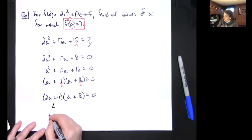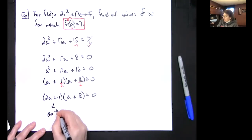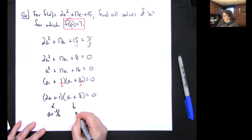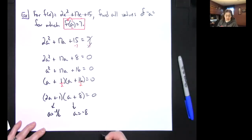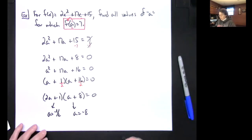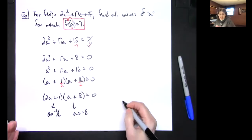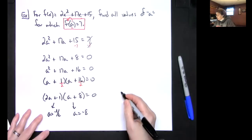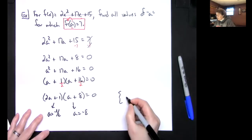So a equals negative 1 half, and a equals negative 8. Let's check — yep, that looks right. And again, they're probably going to ask you to do this in a solution set.